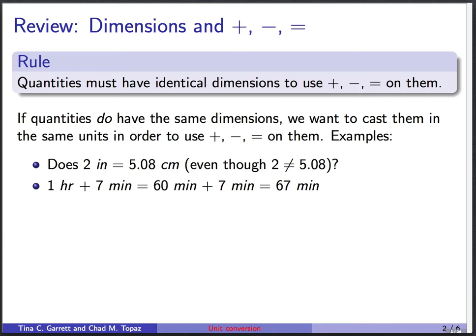In particular, you can remember that quantities have to have identical dimensions if you want to add, subtract, or compare them with an equal sign. So if they don't have the same dimensions, you can't do those things to them. It's like how we said there's no such calculation as three oranges plus seven kilometers. That doesn't make sense.